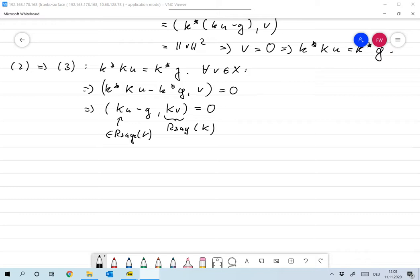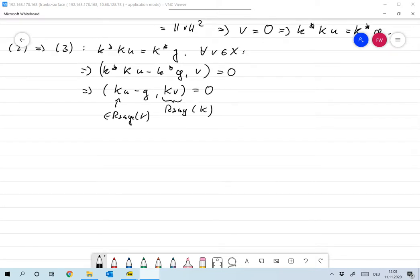So we find that ku is the projection of g onto range of k, and of course I can only project on the closure.